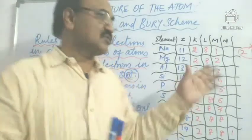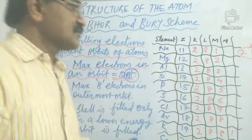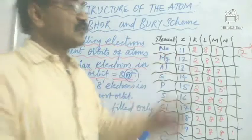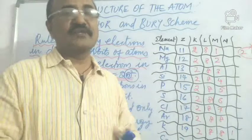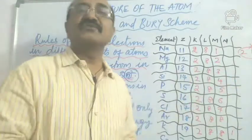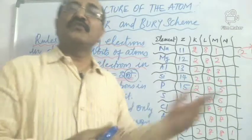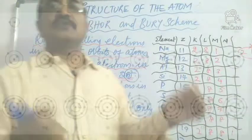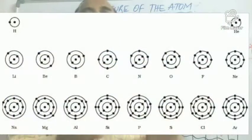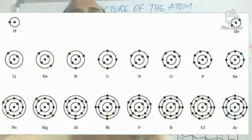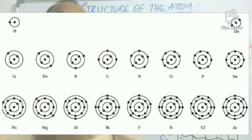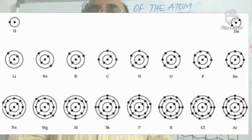These representations can also be shown graphically, as you can see in the figure. Note how the electronic configuration gradually changes from one element to another element.